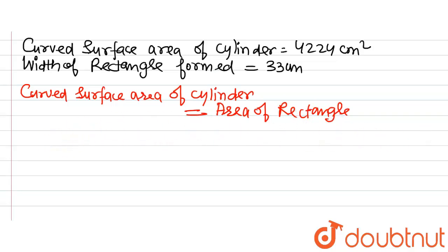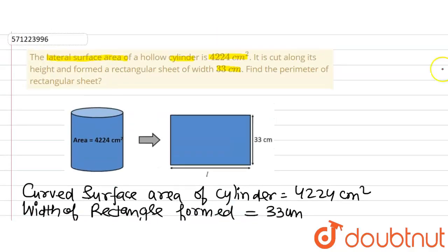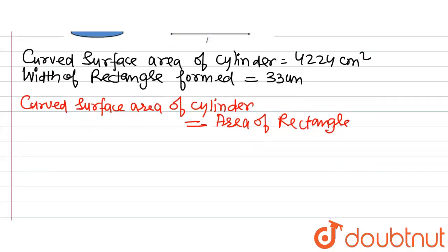So using this concept we will try to find out the length of the rectangle, and then afterwards we are asked to find out the perimeter of the rectangular sheet. So let's do it.